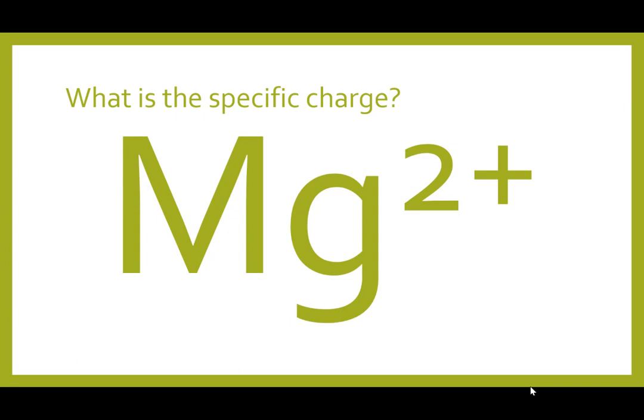So the question we're going to answer is, what is the specific charge on an Mg²⁺ ion? So we've got magnesium that has lost two electrons, and we want to calculate the specific charge. And to do this, we're going to do it in three steps.